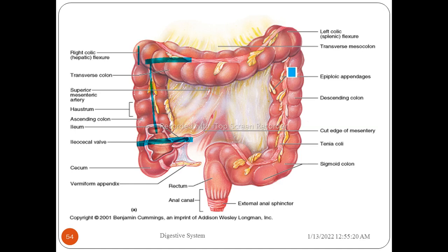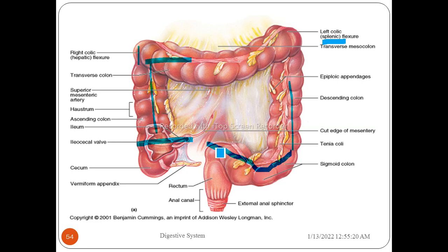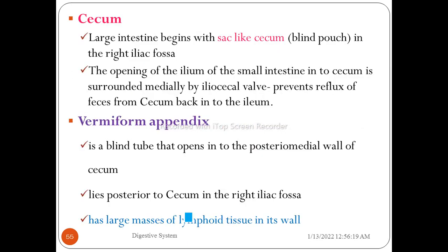On the left side, the junction between the transverse colon and descending colon is the left colic flexure or splenic flexure, named for its proximity to the spleen. The descending colon runs down the left side. Below it is the S-shaped sigmoid colon, followed by the rectum and then the anal canal with the external anal sphincter.